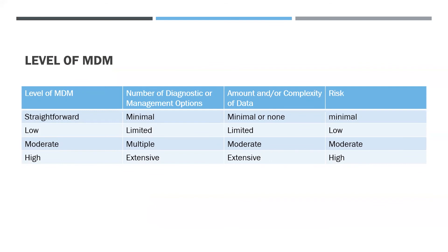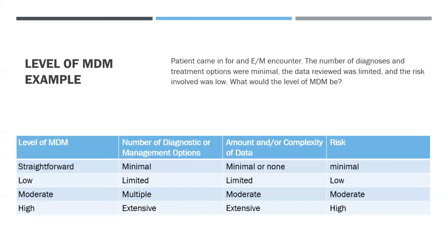To determine the level of medical decision-making for an encounter, identify: the number of diagnoses or management options, the amount and/or complexity of data to be reviewed, and the risk of complications and/or morbidity or mortality. There are four levels of MDM: straightforward, low, moderate, and high. In a final example, a patient with minimal diagnoses/treatment options, limited data reviewed, and low risk — two of the three categories fall into the low level — so the MDM level selected would be low.